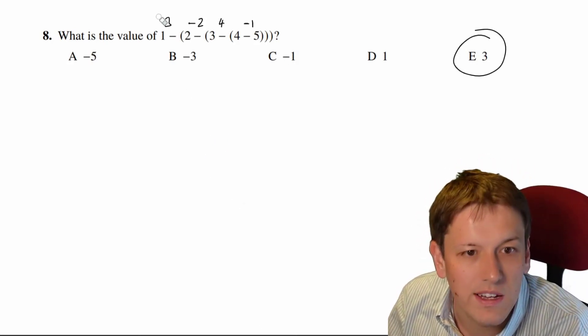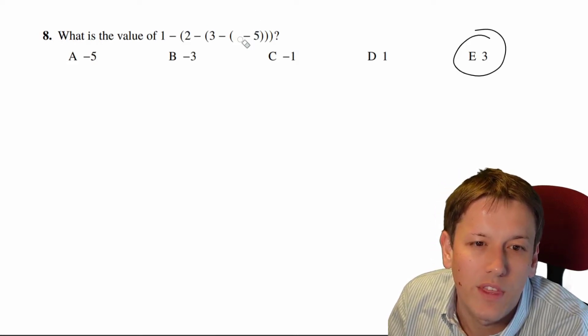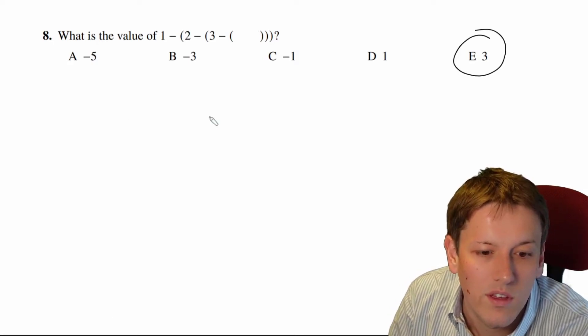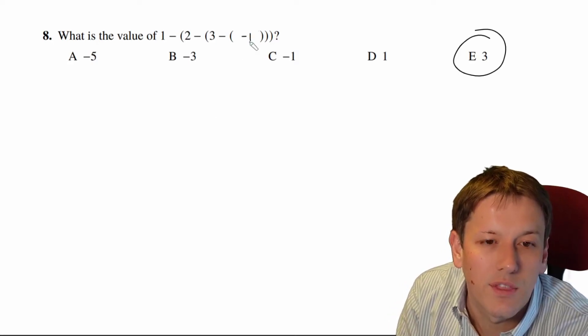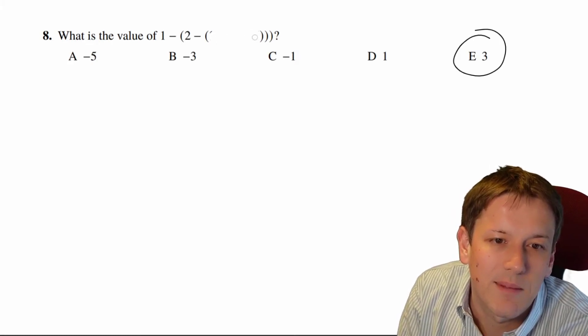If you want me to do that slightly more slowly, you could replace them one at a time and rewrite the whole thing. Right, so I could replace that 4 minus 5 here with minus 1, say, and then 3 minus minus 1 gives 4. I'm just doing exactly the same thing as I did a second ago.